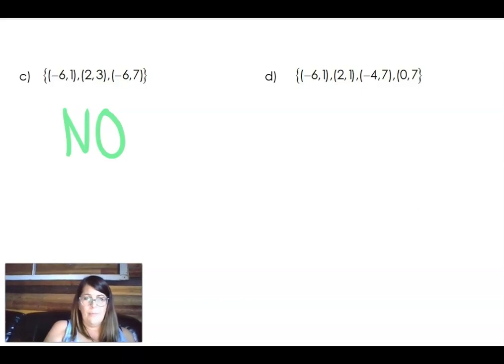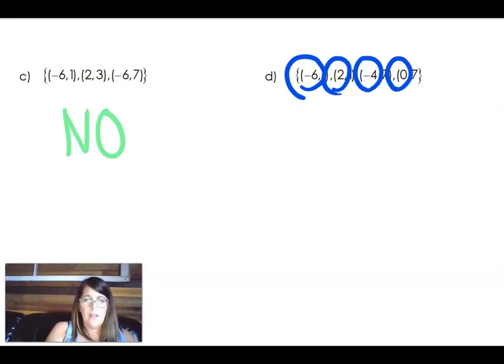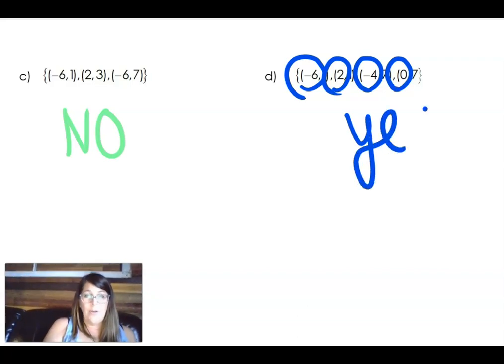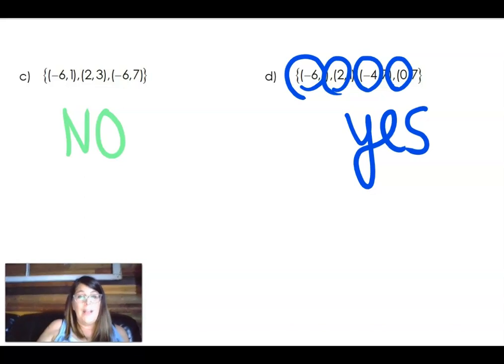Look at this example. What I'm seeing here is I've got a negative 6, a 2, a negative 4, and a 0. So I don't even have to look at the Y's. It doesn't matter if they repeat or not because every input is different.